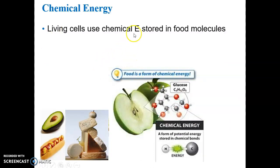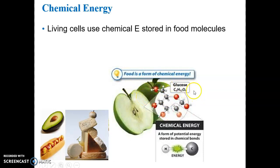Living cells use the chemical energy stored in food molecules, whether we are consumers like animals that have to ingest food, or producers like plants that photosynthesize and generate their own food. Photosynthetic organisms can capture sunlight energy via photosynthesis, producing sugars, and then break down those sugars through cellular respiration. Animals like us can't do that — we have to ingest food to break down biological molecules and harness energy.